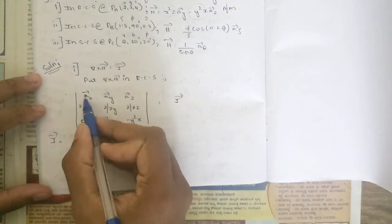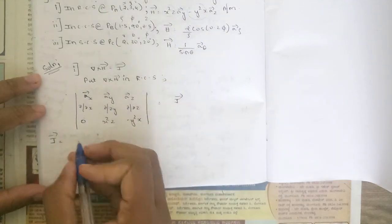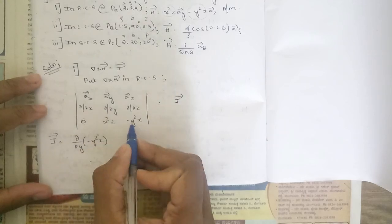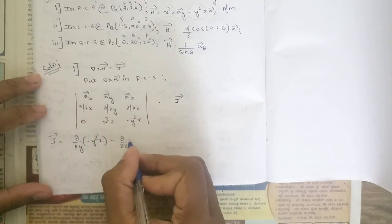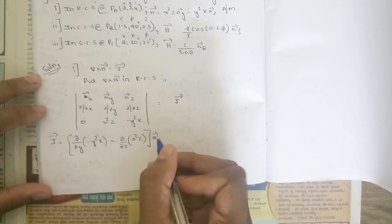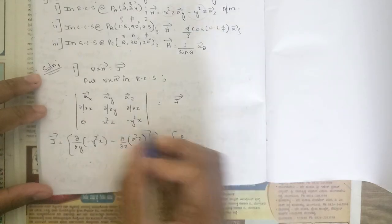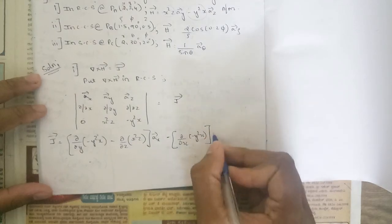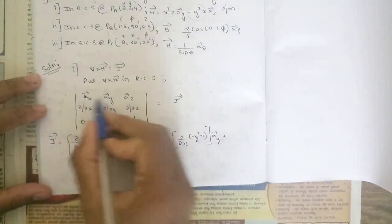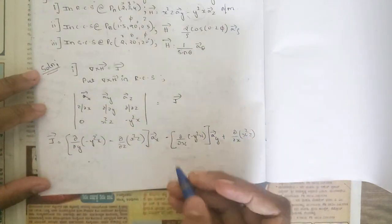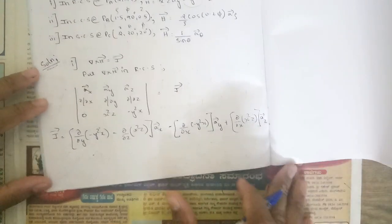Take the determinant by eliminating the first row and first column and cross-multiplying: (∂/∂y of −y²x − ∂/∂z of x²z) · a_x, then minus (∂/∂x of −y²x − ∂/∂z of 0) · a_y, plus (∂/∂x of x²z − ∂/∂y of 0) · a_z.